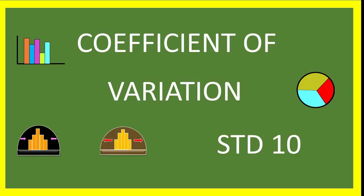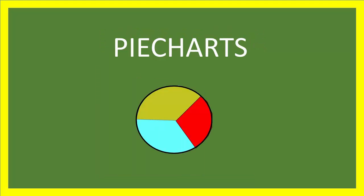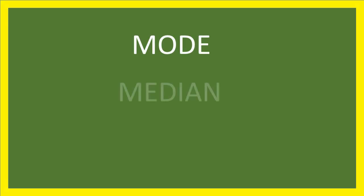We know that histograms and pie charts give visual information of data sets. Mode, median, and mean give numerical information about the distribution of data sets.